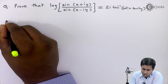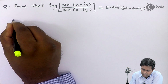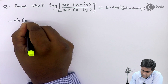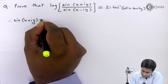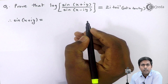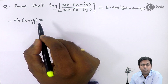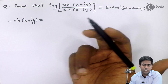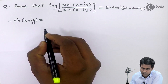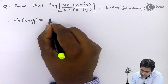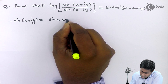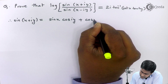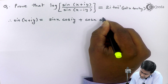So let us start. For sin(x+iy), we use the basic compound angle formula sin(a+b) = sin a cos b + cos a sin b. So this becomes sin x cos(iy) + cos x sin(iy).